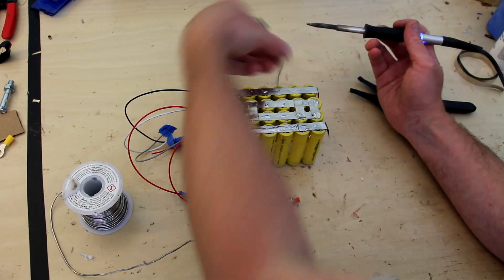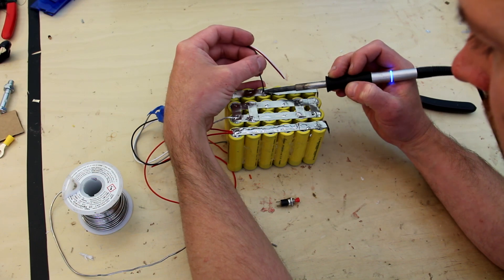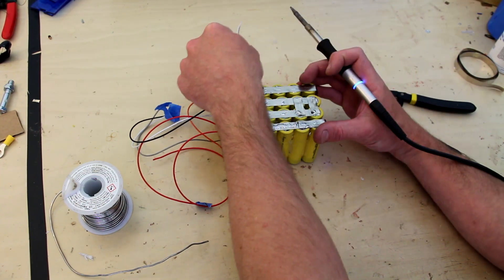To avoid a parasitic drain on the battery, I'm going to connect this voltmeter through a button so it only illuminates when I press the button.